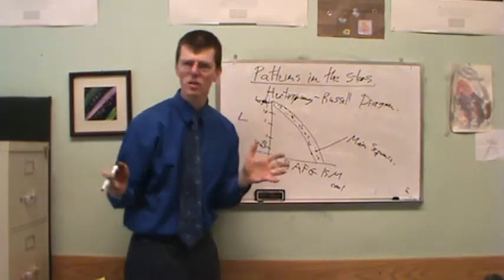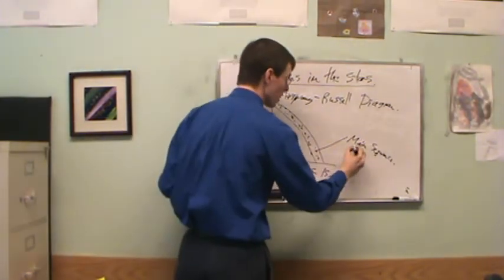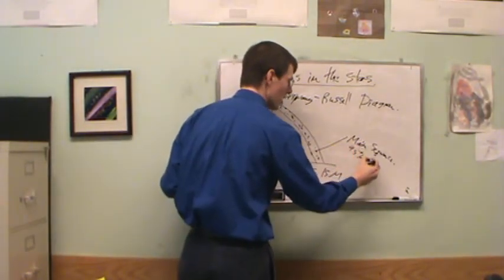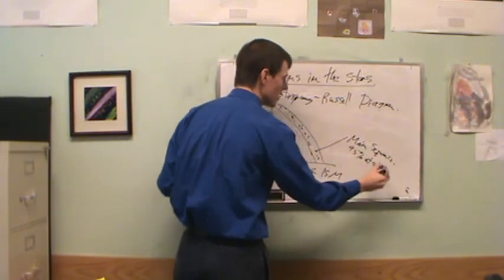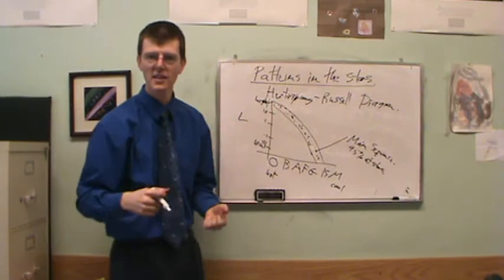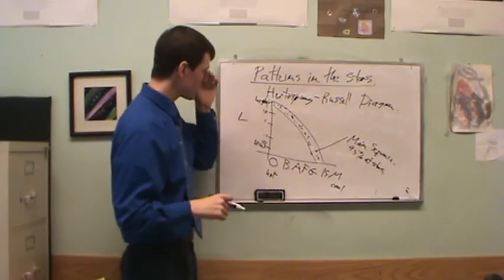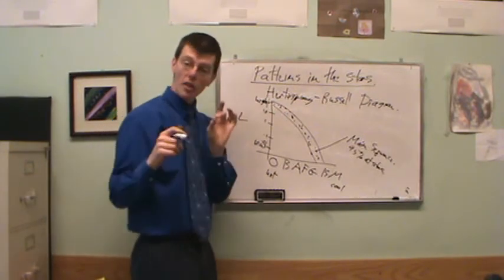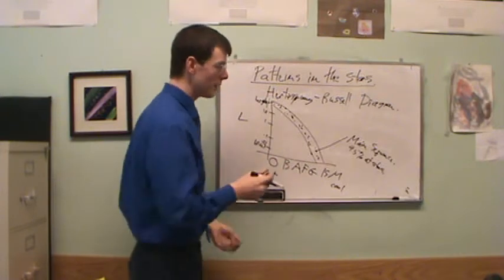Somewhere, it depends on which group of stars we're looking at, roughly 95% of stars. 95% of stars, particularly stars in the sky, just in this neighborhood, our neck of the woods, this part of the galaxy, roughly 95% of stars fall in the main sequence.